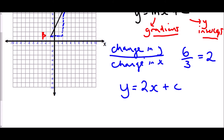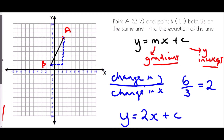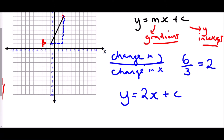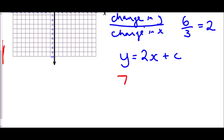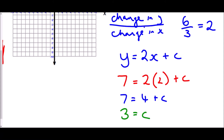How do we guarantee the correct value for c? We use one of the two coordinates — I'm going to use (2, 7). So y is 7 and x is 2: 7 equals 2 times 2 plus c. 2 times 2 is 4, so 7 equals 4 plus c. Taking away 4, c is 3. Therefore the equation of the line is y equals 2x plus 3.